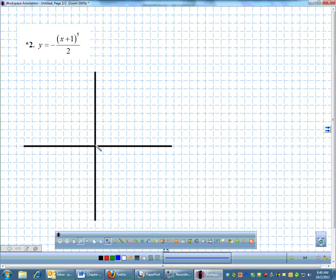Number 2, same type thing. We're going to identify the parent function and then list all transformations. I see something to the 5th. I see a plus 1, a divided by 2, and then it's kind of hard to see, but there is a little negative there. It kind of blends in with the fraction bar. So there are three transformations: 1, 2, 3. And I'm going to start by listing some ordered pairs for my parent function, x to the 5th.